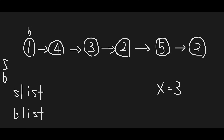Let's begin. First we find 1. Since 1 is less than 3, we add 1 to the small dummy list. Then the small pointer moves forward. Every time, the head pointer moves to next. Then we find 4. Since 4 is greater than x, we add 4 to the big dummy list.